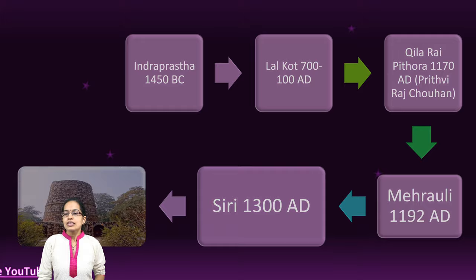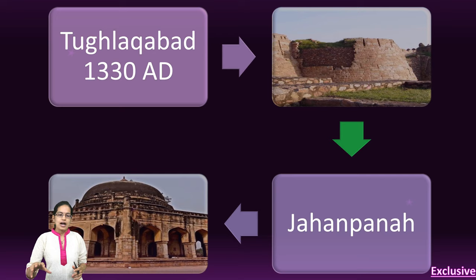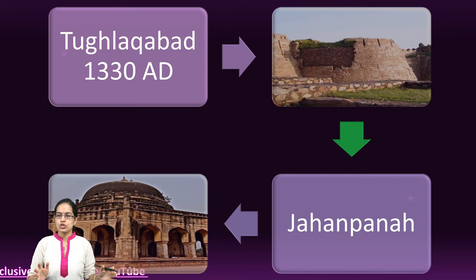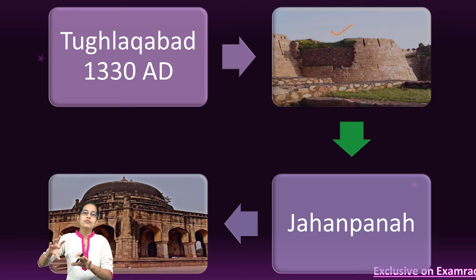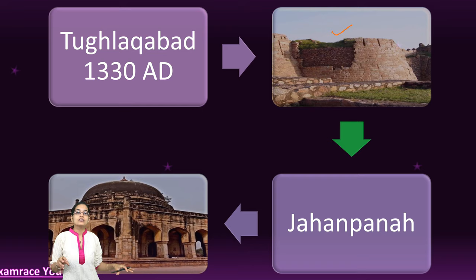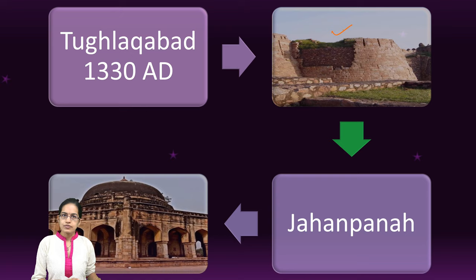The next important developments were Tughlaqabad and Jahanpana. Tughlaqabad was established by Giyasuddin Tughlaq during the second decade of the 14th century, and its remains are still there. It was a little far from the region of Lalkot and Siri. Between Lalkot and Siri was Jahanpana, built by Muhammad bin Tughlaq.